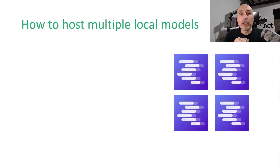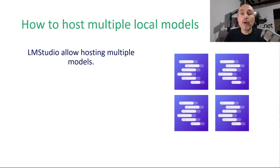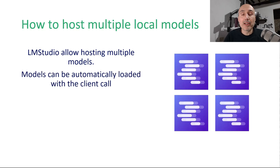In the previous video, I showed how you can use Semantic Kernel to call a local large language model exposed by LM Studio. But the usual question is how you can expose multiple models, not only one model, so your software can use multiple local models. LM Studio has this functionality built in because it allows hosting multiple models and can automatically load the model upon a request from the client if the model is already downloaded. Let's see how and how we can use this with Semantic Kernel.